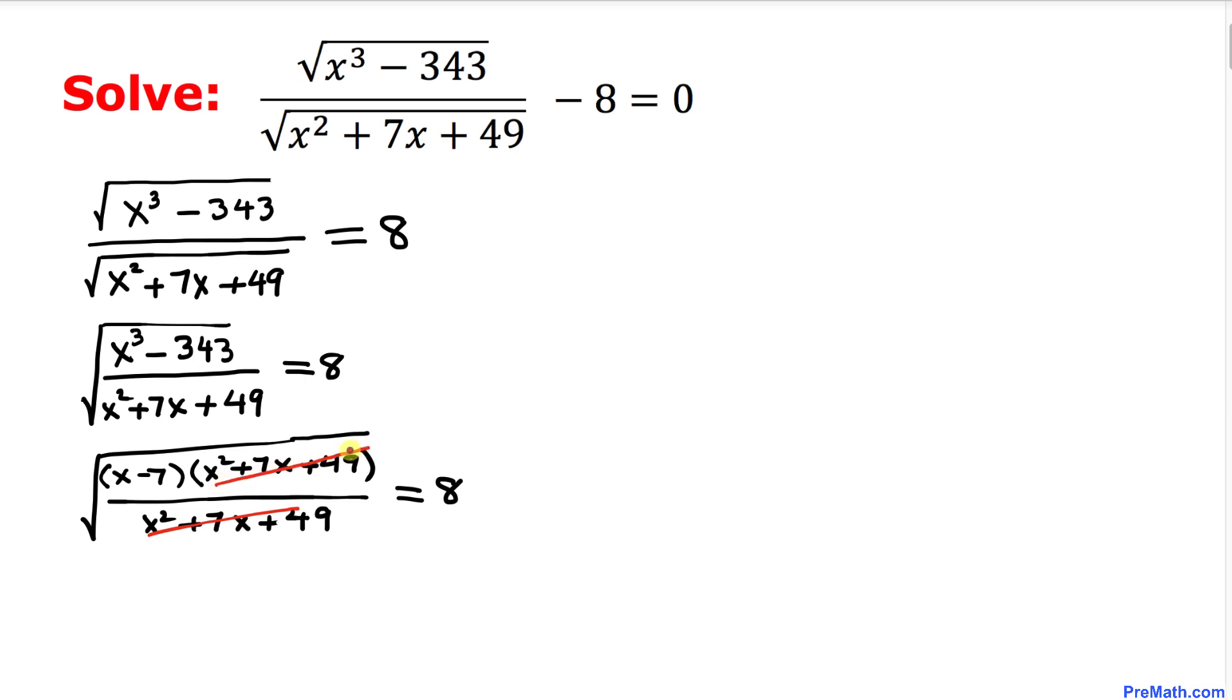So we simply ended up with the square root of x - 7 only on the left-hand side, equal to 8. Now let's go ahead and square on both sides to undo this square root. So this square and square root are gone.